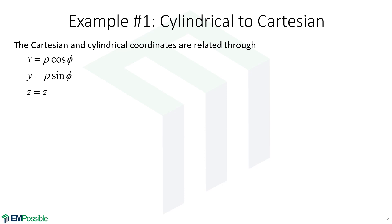Let's look at some examples of calculating a Jacobian matrix. Let's say we want to convert from cylindrical to Cartesian coordinates. We need equations to do that, so we calculate X, Y, and Z as a function of our cylindrical coordinate parameters — rho, phi, and Z. Z equals Z, that's the easy one. And we should be pretty familiar with how we calculate X and Y from rho and phi in cylindrical coordinates.